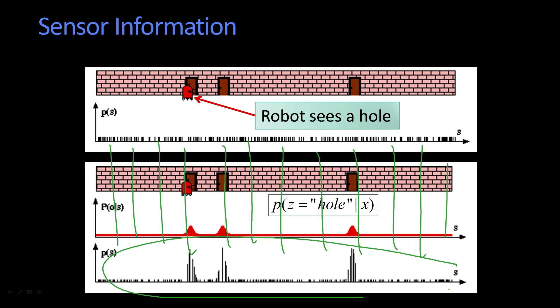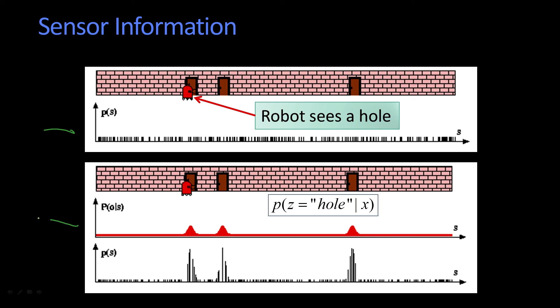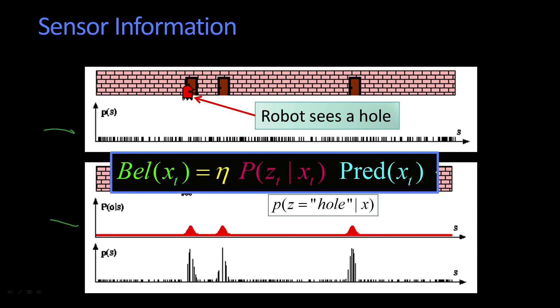So that's what this distribution is down here. That is the multiplication of the prior times the likelihood. And in math, remember, the belief is proportional to the prediction, or my belief prior, that's this here,